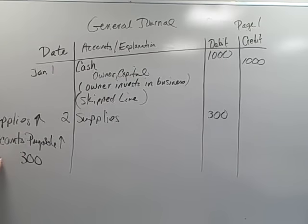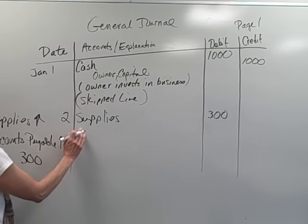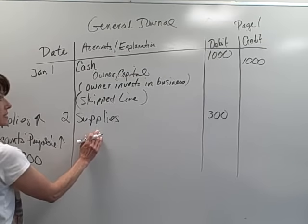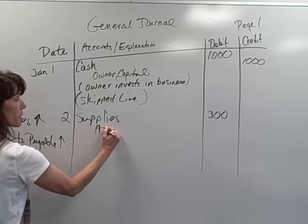Since accounts payable is the account that's being credited, I know to increase accounts payable, I need to credit the account. So I'm going to list that next. And I'm going to indent a little bit. And this is my accounts payable account.